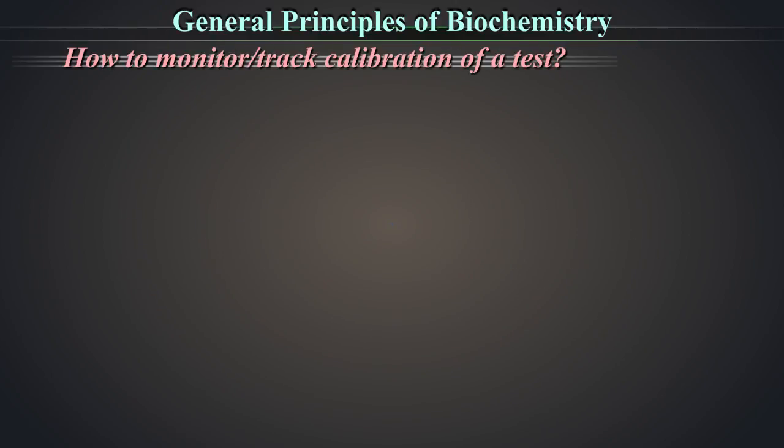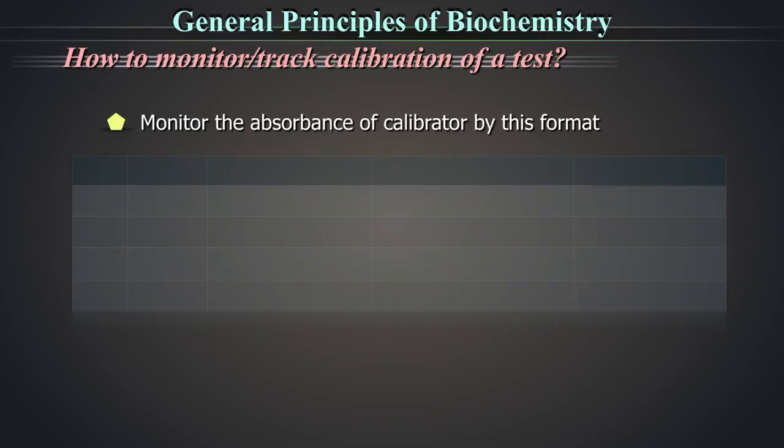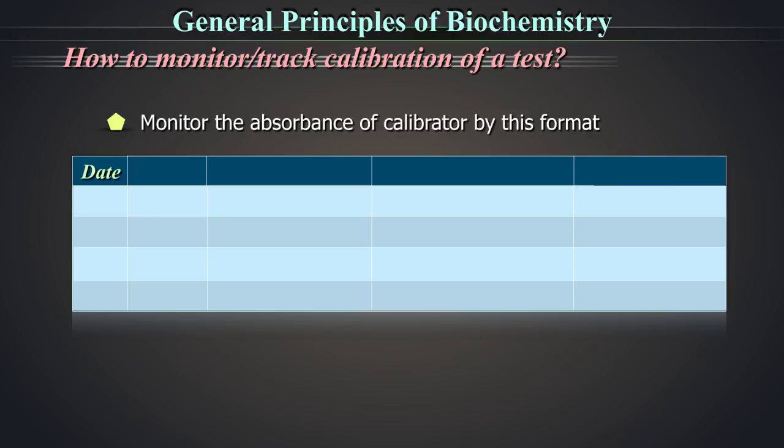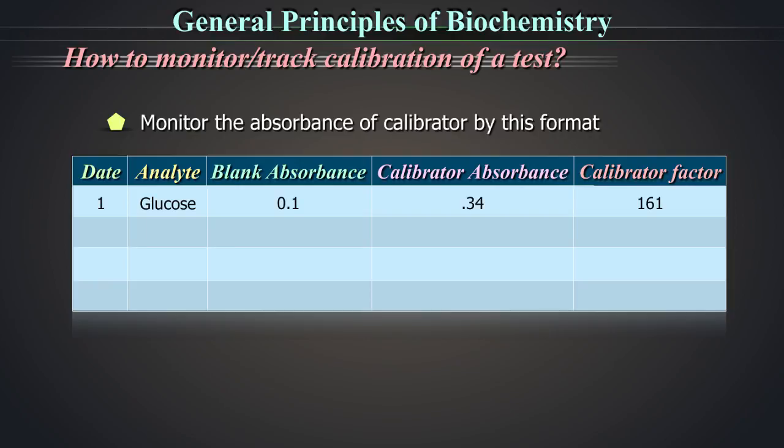How to monitor or track the calibration of a test? Monitor the absorbance of calibrator by the given format. For example, you run the calibrator for glucose. You can see from the log that the blank absorbance, calibrator absorbance and the calibrator factors are all within range for day 1, day 2 and day 3. But on day 4, the values are out of range. This is an indication to troubleshoot and rerun the calibrations.